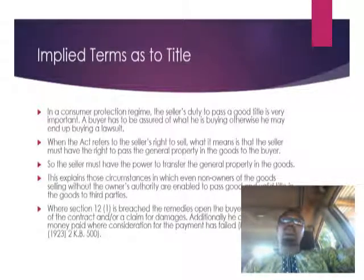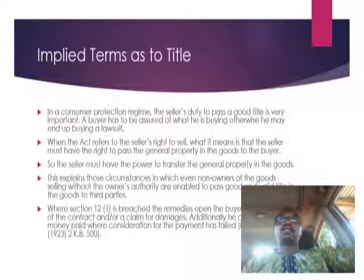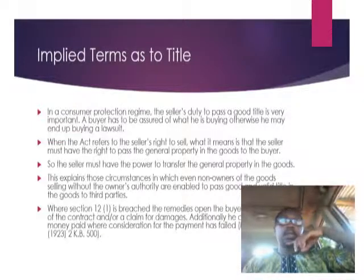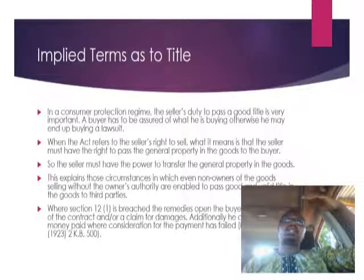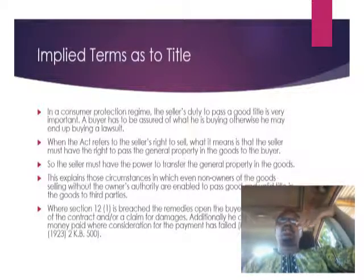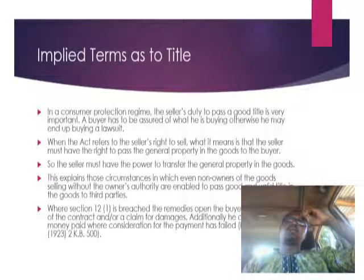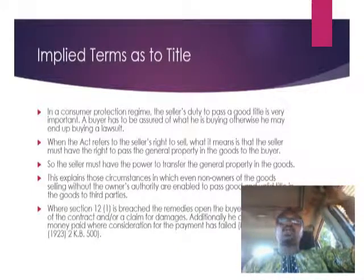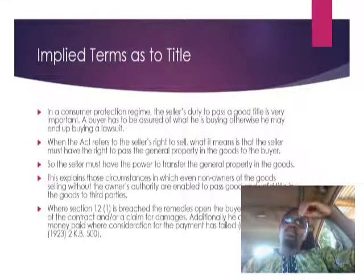For example, if the goods were stolen and the owner comes to recover them, your quiet possession is being disturbed. If the seller himself comes to retrieve the goods saying the goods actually belong to a third party and he had no right to sell them, he has disturbed your quiet possession. The law says you will have a right to obtain damages from that particular seller. If a third party does the same, you can also sue the seller and obtain damages because your right to quiet possession has been disturbed.